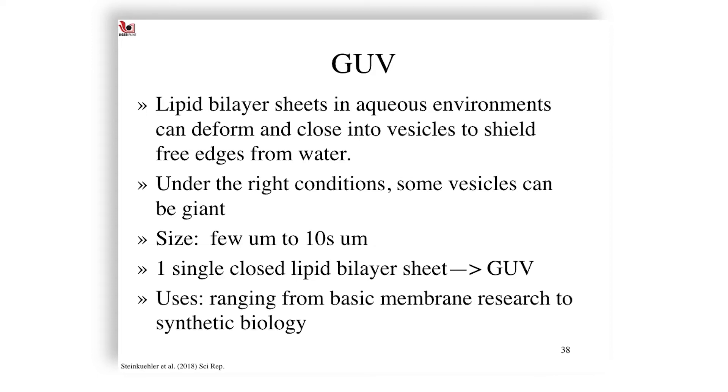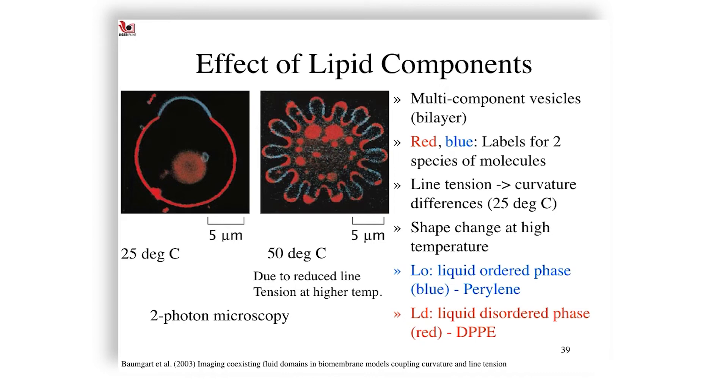The uses range from basic membrane research to synthetic biology. In GUV work, it has been found that if you have more than one kind of lipid—remember we talked about geometry determining membrane structure, and we assumed we had only one kind of lipid—if you have more than one kind, then as these two colors indicate, blue indicating liquid ordered phase lipid perylene and disordered phase formed by DPPE can form structures that self-segregate. This separation is also dependent on the ambient temperature. As you see on the left-hand side, at 25 degrees Celsius it forms this sort of vesicle with a blob to it, whereas at 50 degrees Celsius, at a higher temperature, line tension changes cause this kind of almost fingering-like structure.